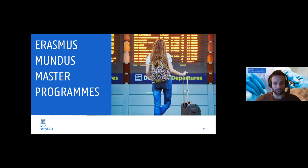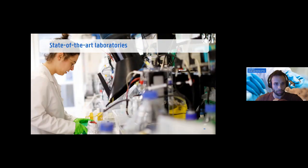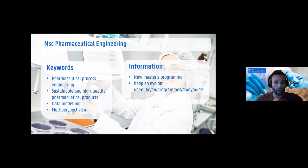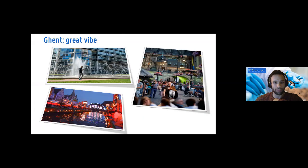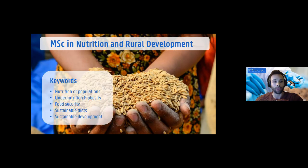My name is Jare and I'm also part of the International Training Center. I'll be talking today about the programs we offer here at Ghent organized in Belgium. The first program is Nutrition and Rural Development — a program that has existed quite a while at our university, and it trains you to develop programs that can improve nutrition of populations.